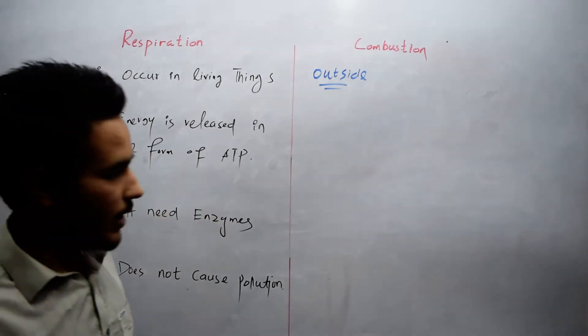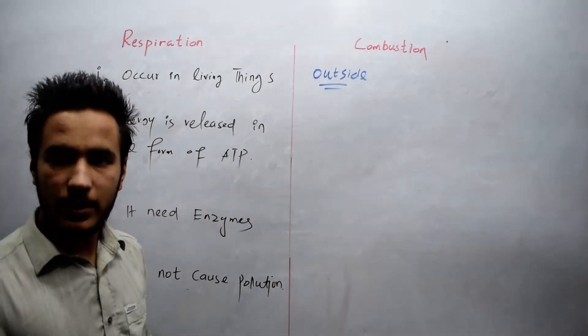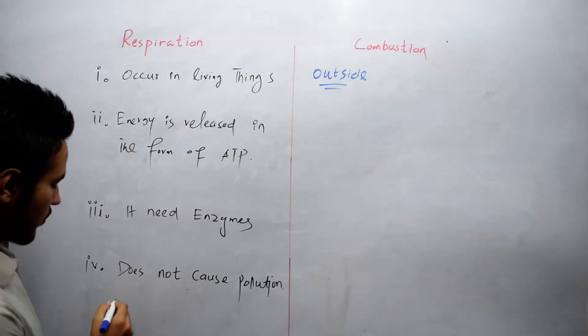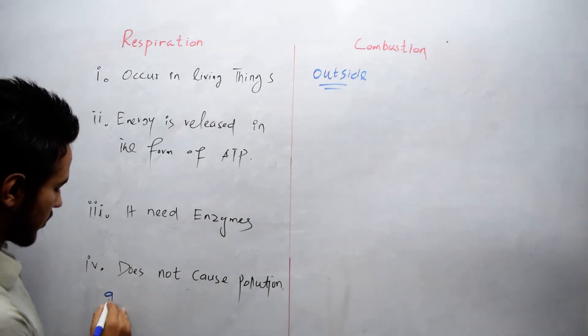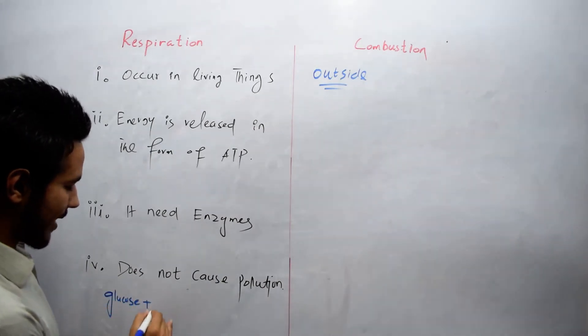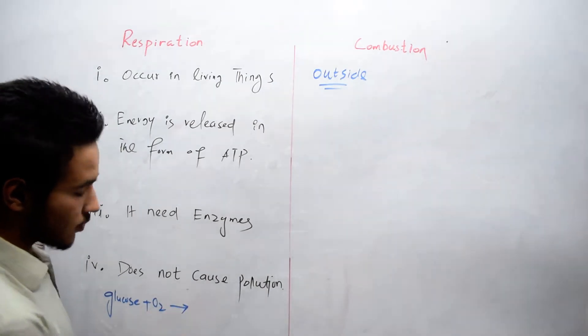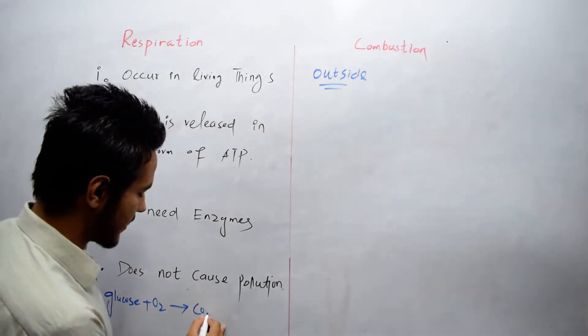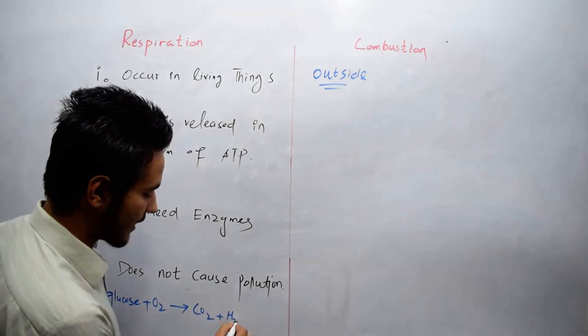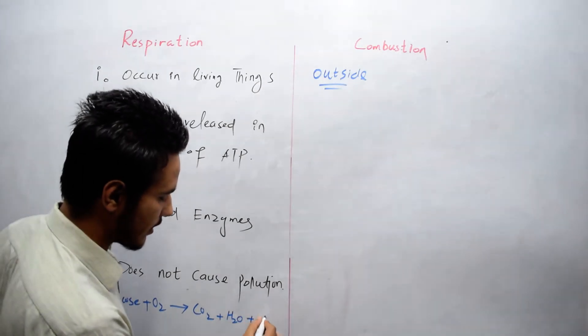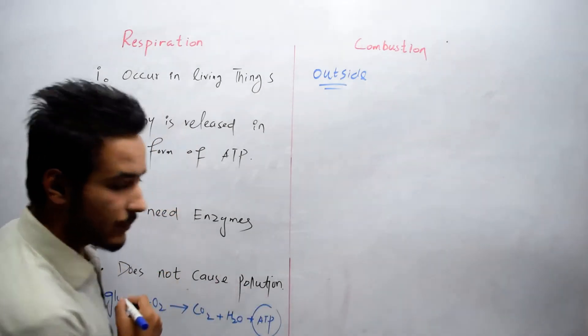In respiration, energy is released in the form of ATP. If you look at the reaction of respiration, we have glucose plus oxygen, which gives us carbon dioxide plus H2O (water) plus ATP. This is the energy we get.